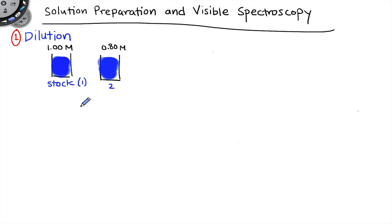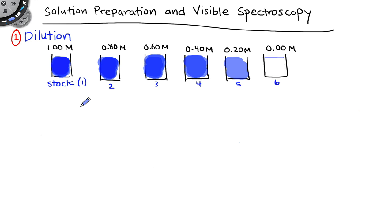We're going to dilute this to prepare a number of solutions that are lighter, that have a weaker blue color, all the way down to 0.0 molar copper 2, which will simply be deionized water. Each of these solutions has numbers. We'll need to do some calculations to figure out how much of the stock to add to prepare these diluted solutions at our target volumes.